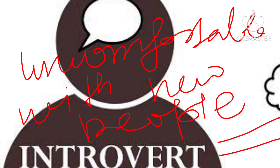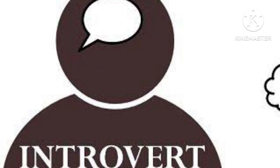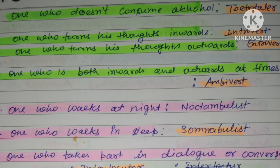So an introvert is a person who turns his thoughts inward — a very reserved person who is not comfortable meeting new people or being in the company of others. In common usage, an introvert is someone who is shy, gets nervous around new people, and tends to remain lost in himself.